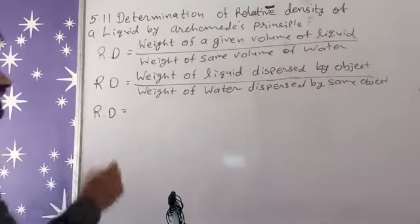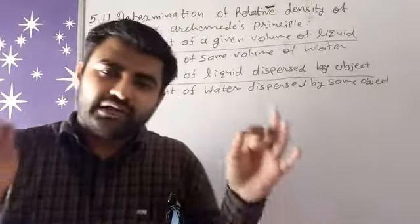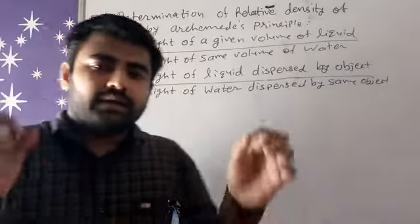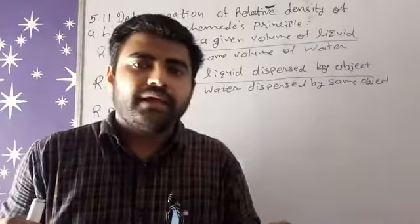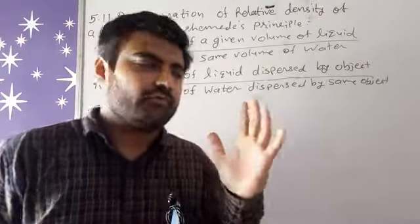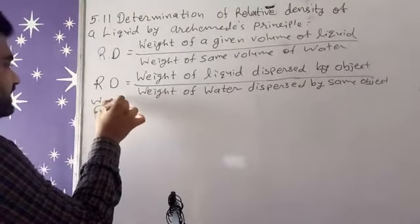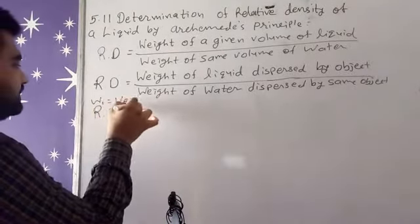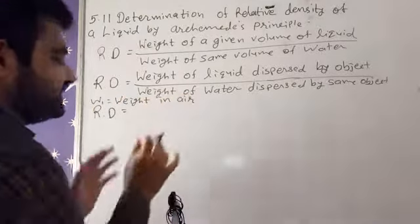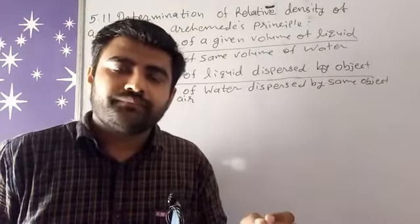There is a third formula, and for this formula there is a small experiment. First we take a substance and find its weight — that weight is W1. So W1 is the weight in air. Then we take a liquid whose relative density we need to find.